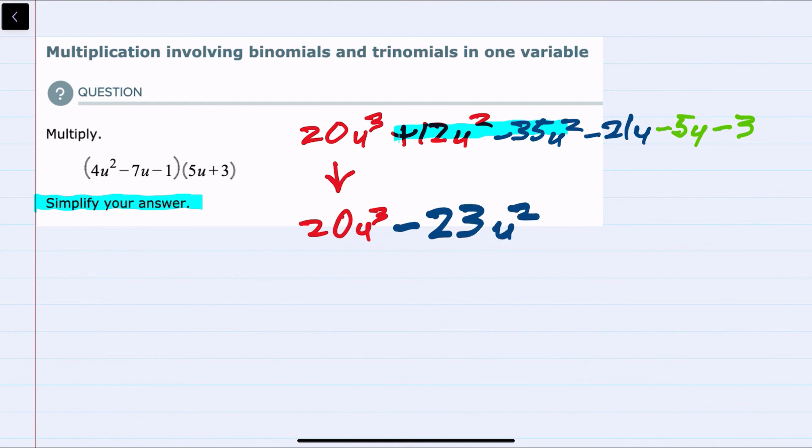And then we have other like terms here. Minus 21u minus 5u is minus 26u. And then we have the one constant term, minus 3, to bring down. So after combining those like terms, we have our simplified solution.